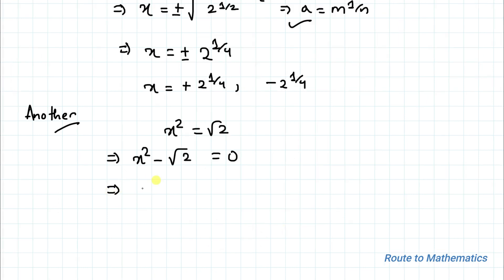This implies we can write x square minus, and root 2 can be written as 2 to the power 1 by 4 whole to the power 2 equals 0. So that 1 by 4 multiplied with 2 becomes 1 by 2.